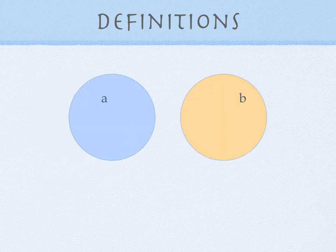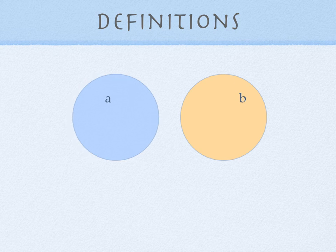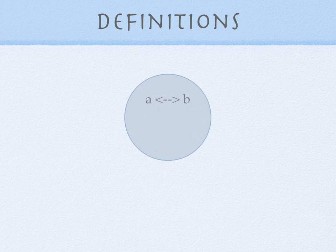But in a definition, the two things, the two parts, really occupy the same region. So instead of writing them one inside the other, they really occupy the same space.